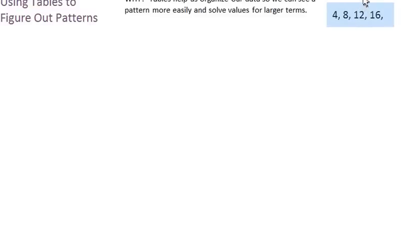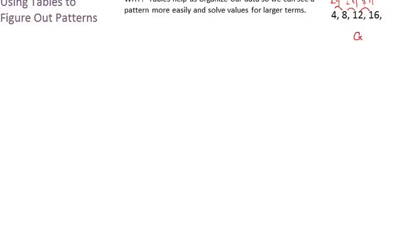For example, say our data is 4, 8, 12, and 16. We can use our basic strategies to extend this data. That looks to be a growing pattern because the numbers are increasing and the jumps are small, so I'm probably adding — in this case, adding 4 each time. 4 plus 4 is 8, plus 4 is 12, plus 4 is 16.